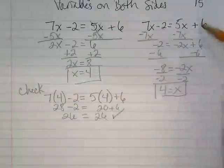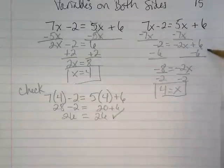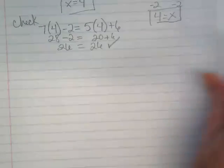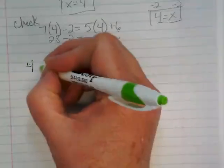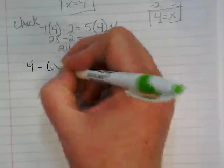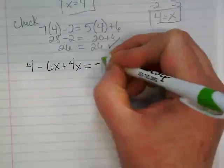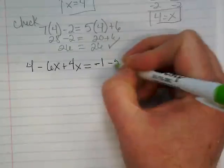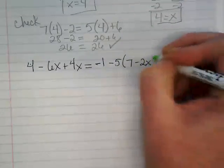I actually don't usually work them completely like this. I'll show you how I would normally do it in a second. This is just to show you step by step. A slightly more challenging problem. Let's start with 4 minus 6x plus 4x equals negative 1 minus 5 times 7 minus 2x.